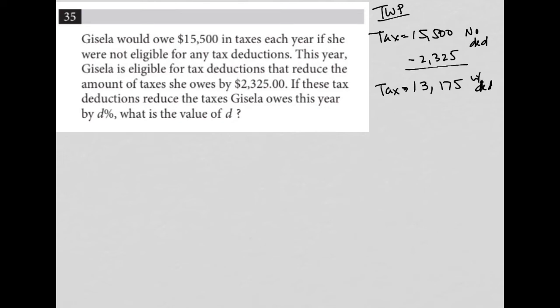Okay, and then if these tax deductions reduce the taxes Gisela owes this year by D%, so $2,325 is equal to D%. What is the value of D? Well, then I just have to figure out what percentage,